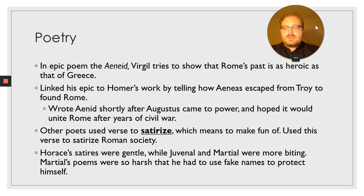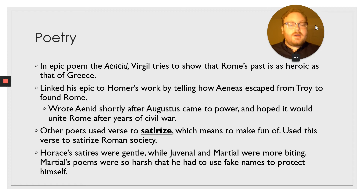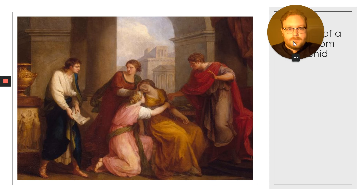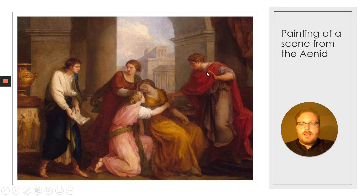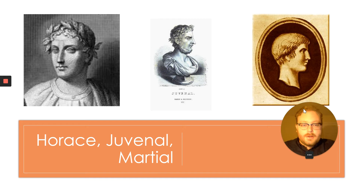Here are some examples of Roman poets, one of whose poems you're going to be reading. Horace's satires were gentle, while Juvenal and Marshall were more biting and very critical. Marshall's poems were so harsh that he had to use fake names to protect himself. This is a painting from a scene from the Aeneid, and these are the three poets just mentioned: Horace, Juvenal, and Marshall.